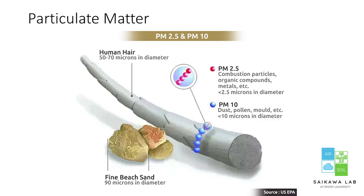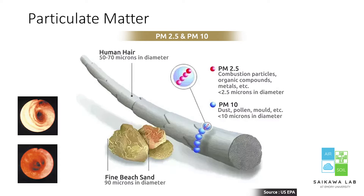You cannot see these particles unless they scatter radiation enough to make visible air pollution. What I'm showing here on the left-hand side is human lung tissue — at the top, when you're exposed to very clean air, and at the bottom, when you're exposed to a lot of PM2.5 or PM10. The tissue gets very red and inflamed, and that obviously causes a lot of health issues. In addition, air pollution can also cause crop yield loss and aesthetic problems.